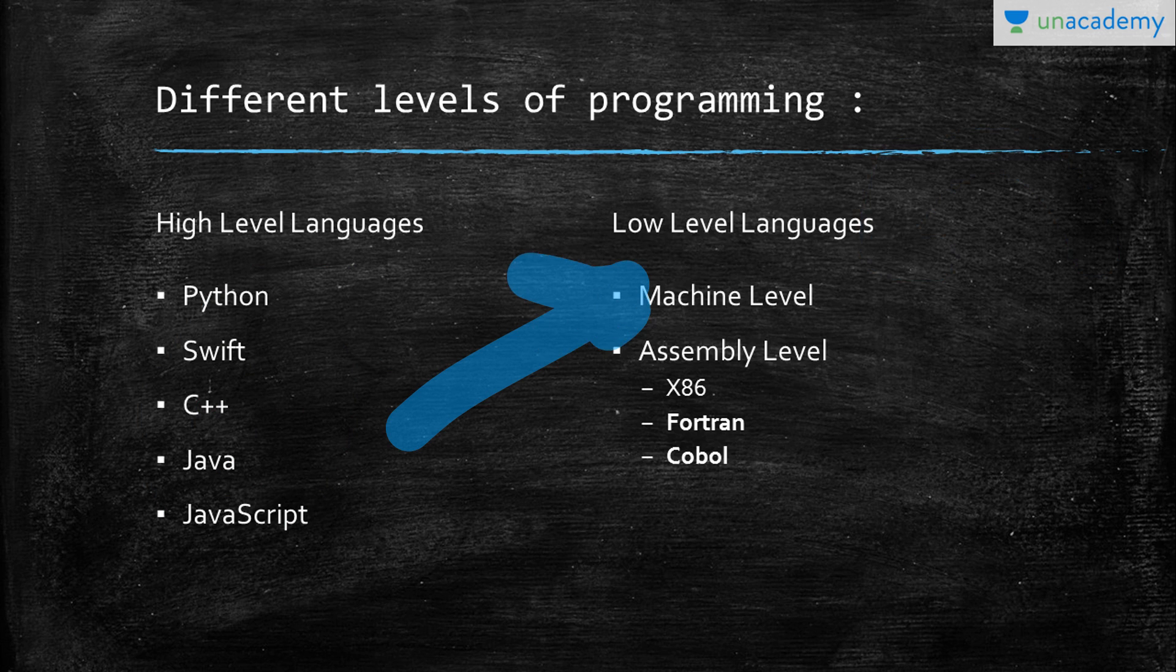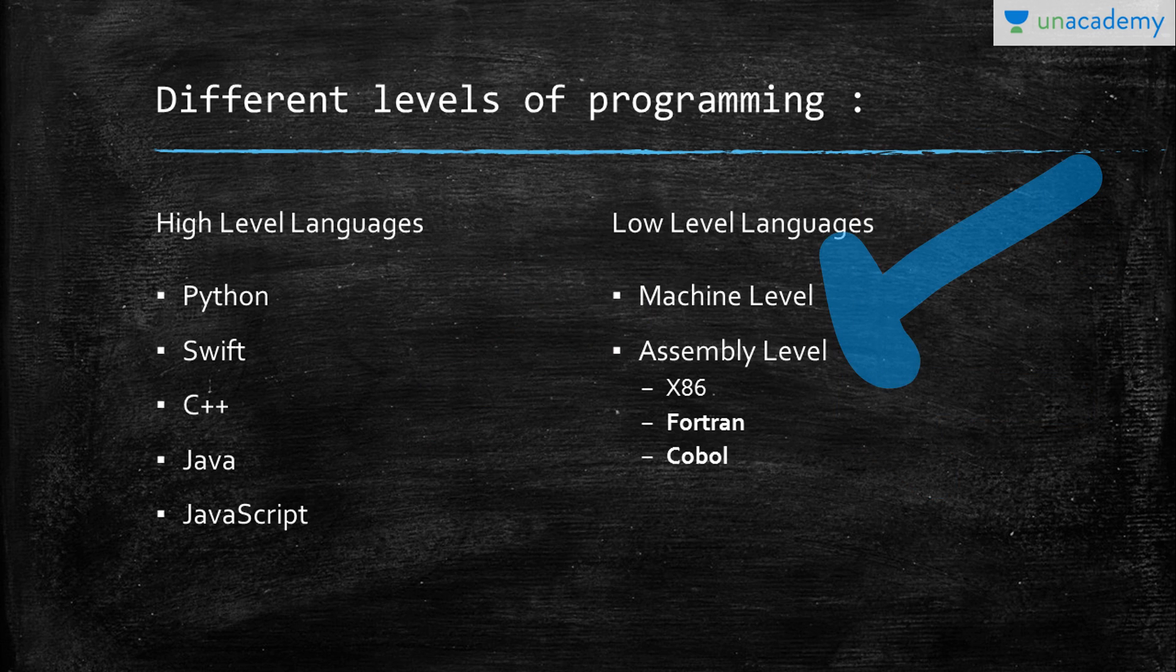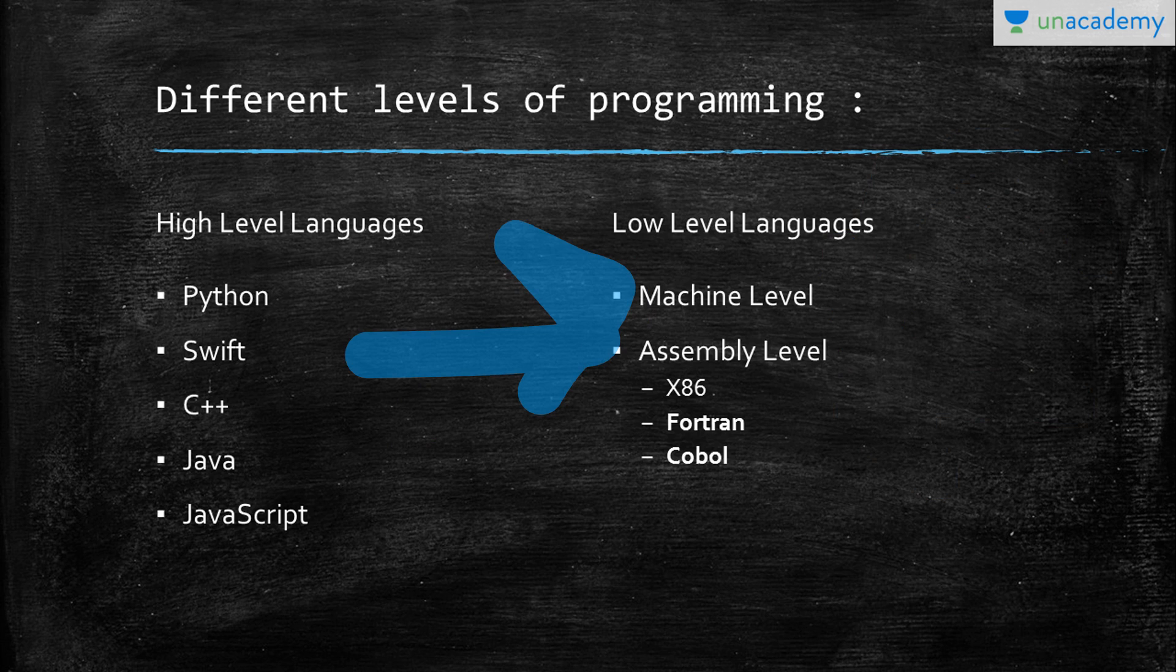These are machine-level languages and assembly-level languages. Machine-level languages are the ones which use binary numbers, so the whole instruction is written in binary numbers—that is zero and one. So it's not easy for everyone or anyone to understand the code or the instructions given in it.